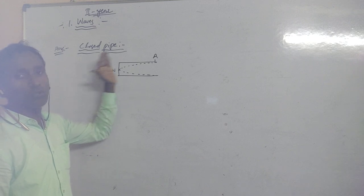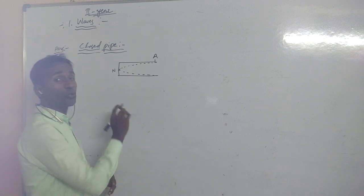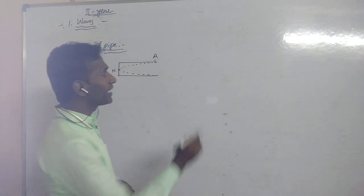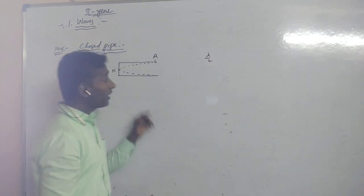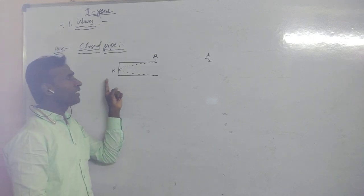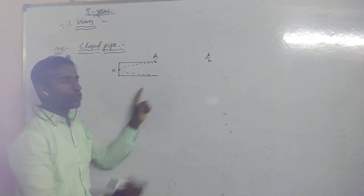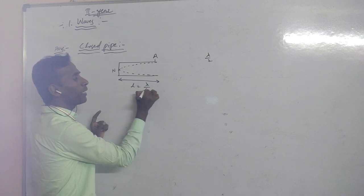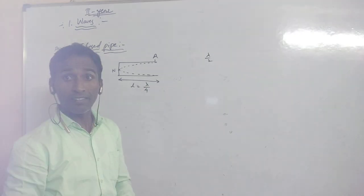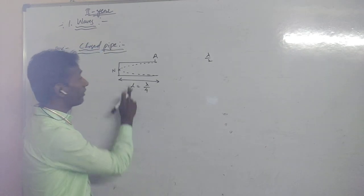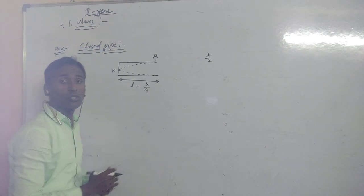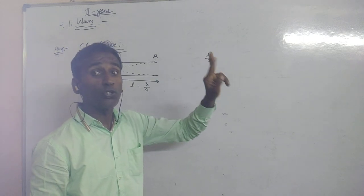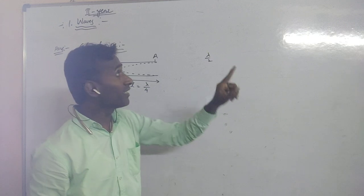The distance between two consecutive node and anti-node is lambda by 4. The distance between one node and one anti-node is lambda by 4, so L is equal to lambda by 4.